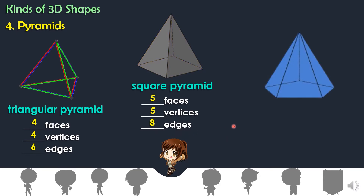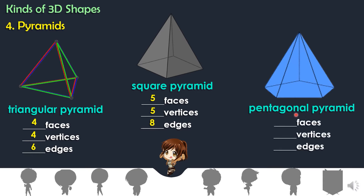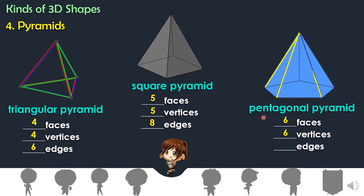The next kind of pyramid is the pentagonal pyramid. It is called pentagonal because the base is in the shape of a pentagon. Let us count the faces: one, two, three, four, five, six. The pentagonal pyramid has six faces.